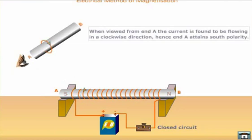If the bar is viewed from one end and the current is found to be flowing in a clockwise direction, then that end will attain south polarity.